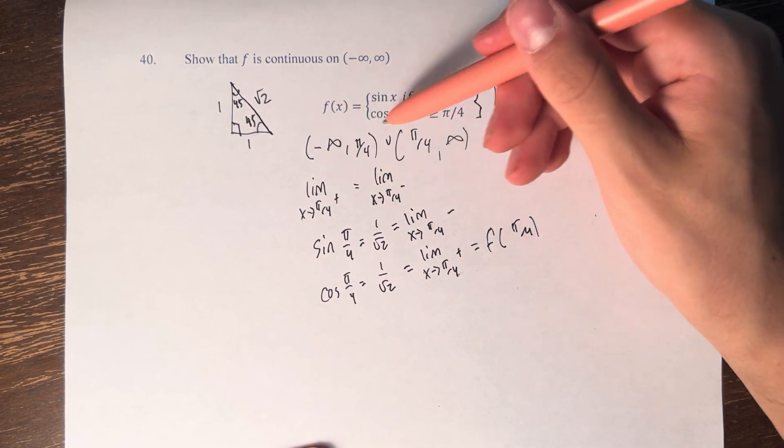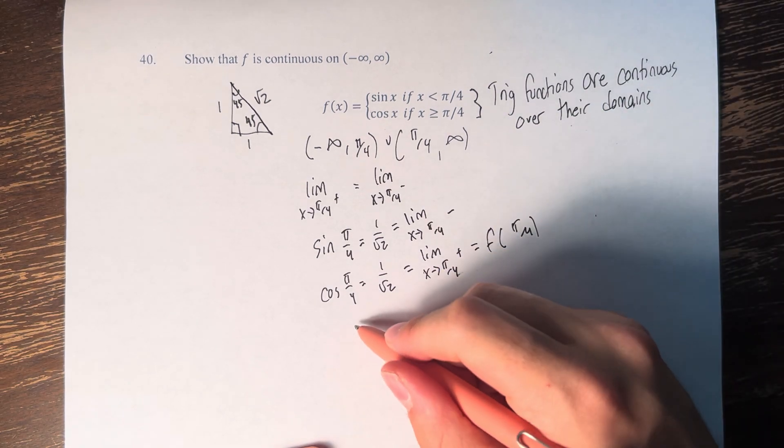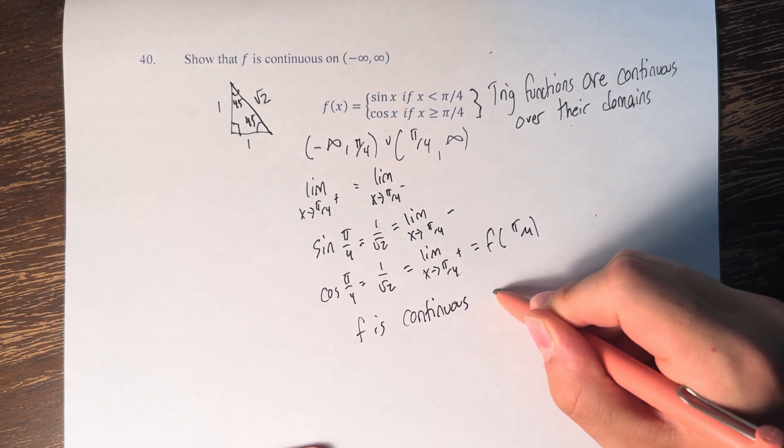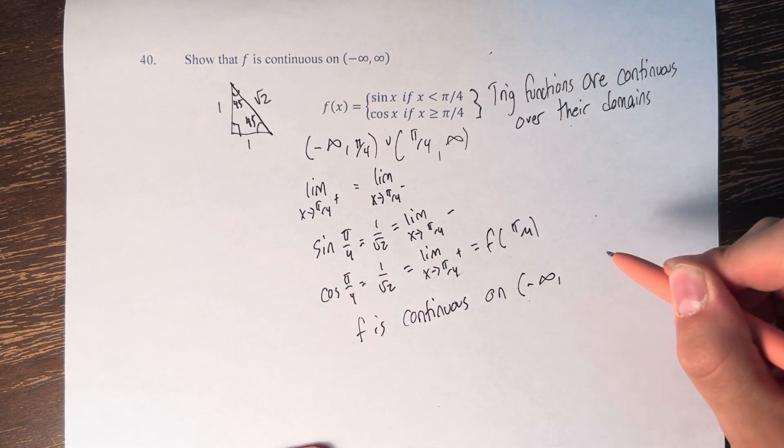And since that was the only spot missing in our intervals, we can say that f is continuous on negative infinity to infinity.